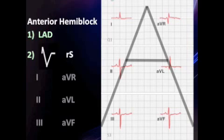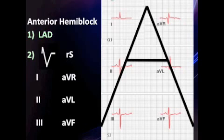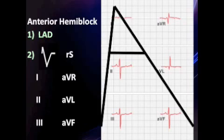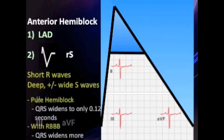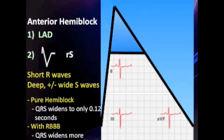So how can we remember that? We draw a funny-looking letter A for anterior over the limb leads, which tells us that the inferior limb leads 2, 3, and AVF are what we should be looking at. So here we find a little R and a deep S. Now, if it's just a pure hemi block, the QRS is unwidened. But if concomitant conduction disease exists — for example, a person with a right bundle branch block — then the S can look wider.